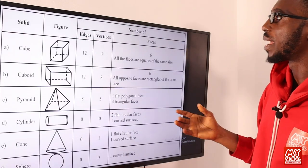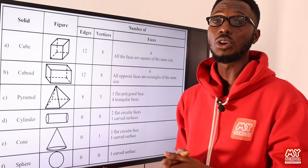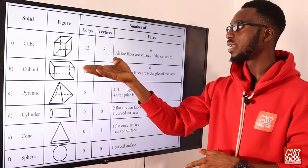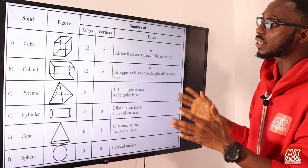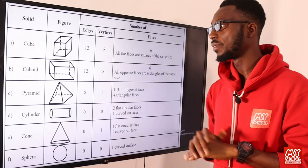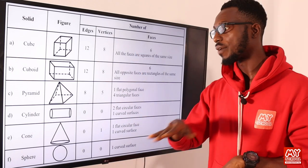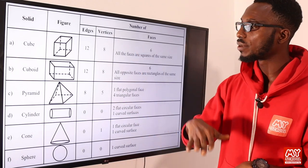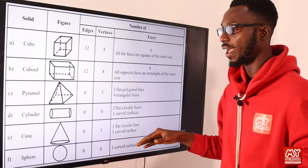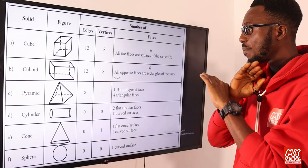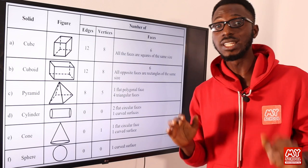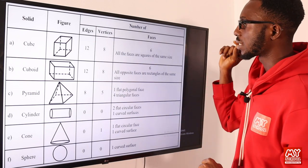We have some examples of solid figures or solid shapes. We have your cube, which has 12 edges and 8 vertices. We have your cuboid, your pyramid, your cylinder, your cone, and your sphere. You can pause this video to assimilate these details. These are very good examples of solid or 3D shapes.